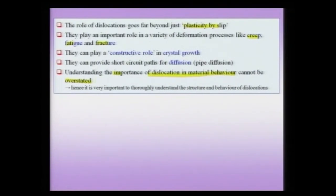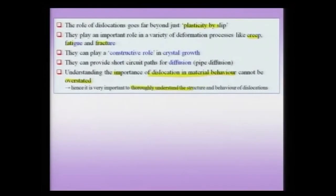Their role is not just related to mechanical behavior. For instance, in electronic equipment and devices, if there are dislocations in a semiconductor, the material behavior could be adversely affected. Therefore, we need to understand the presence of dislocations and how many dislocations can be tolerated in a semiconductor device. We need to thoroughly understand the structure and behavior of dislocations if we want to comprehend material behavior starting from the microscopic scale.